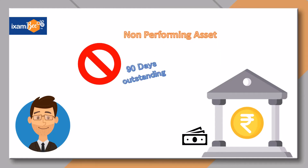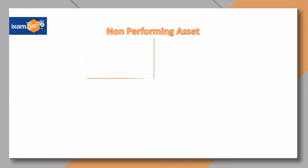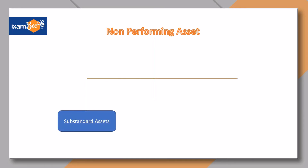Based on different parameters, the non-performing assets are classified into 3 different types: substandard asset, doubtful asset, and loss asset.